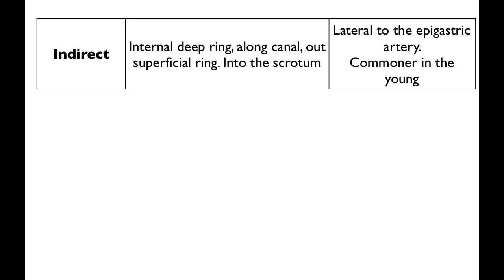If the tunica vaginalis which goes alongside has remained slightly open, you can have a hydrocele where just intra-abdominal fluid will track down to the testes. But if that tract is slightly larger, you can end up getting contents of bowel herniating through it. That's why it can go into the scrotum and why it's covered in all three layers including the spermatic fascia.